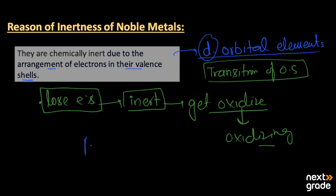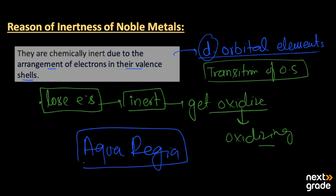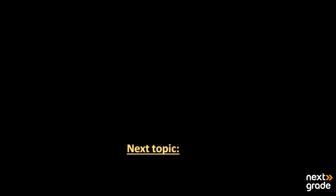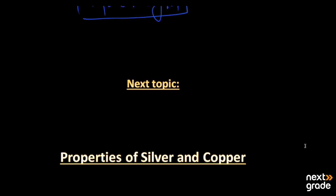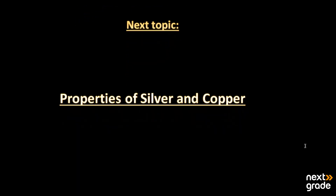The noble metals only react with one substance called aqua regia, which we will discuss in detail in the next topic. The next topic will also cover the properties of silver and copper, which are also considered noble metals. I hope you understand today's lecture — if you have any queries, please ask in the comment section. Keep learning and have a good day.